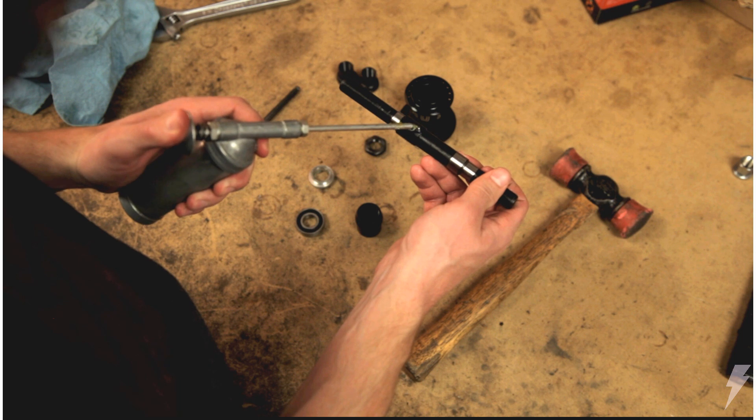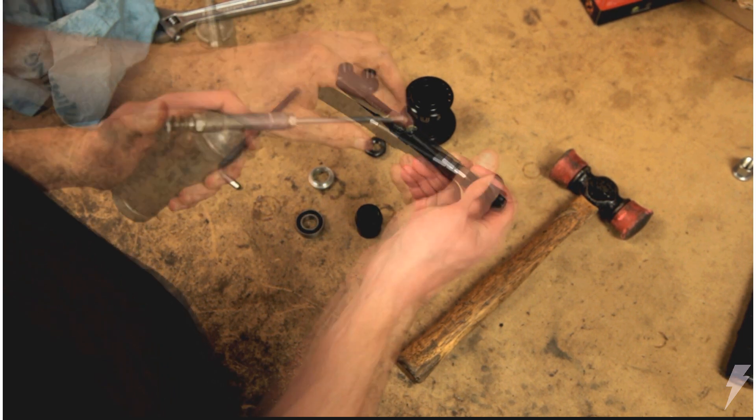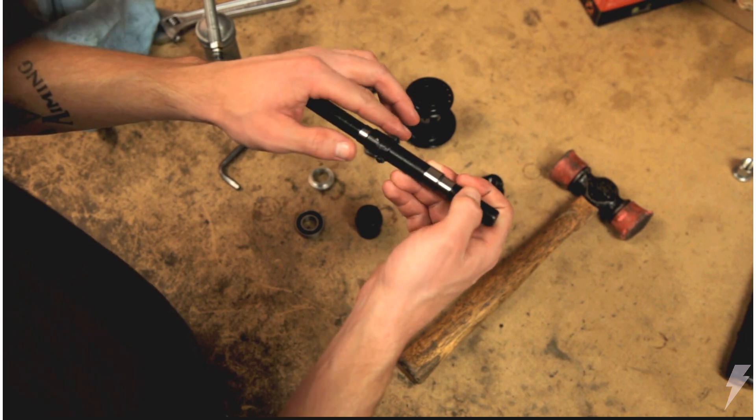Once clean, go ahead and apply a liberal amount of new grease to the ball spring assembly on the axle. These ball springs are what provide resistance to the clutch and need a good amount of grease to function properly.